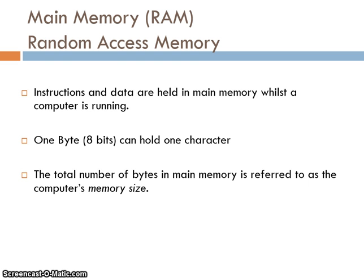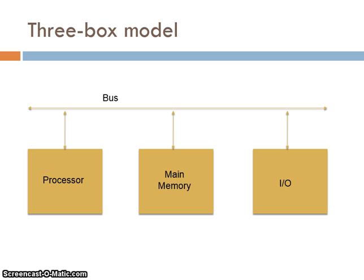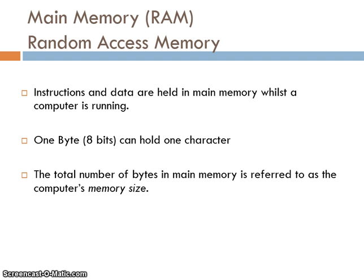Main memory sits in the middle of our model. It holds the data and instructions while the computer is running — specifically the data and instructions currently in use. One byte can hold one character, and main memory is made up of several bytes. You may have a RAM stick of two gigabytes, meaning you can hold two gigabytes of data. The total number of bytes in memory is referred to as the computer's memory size.